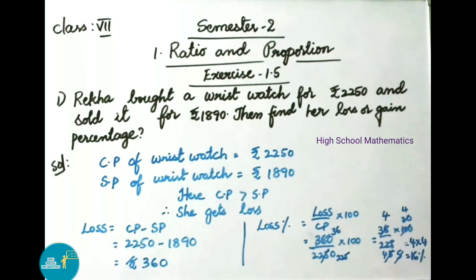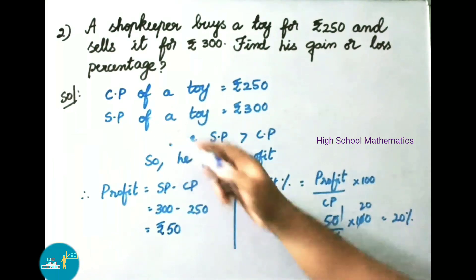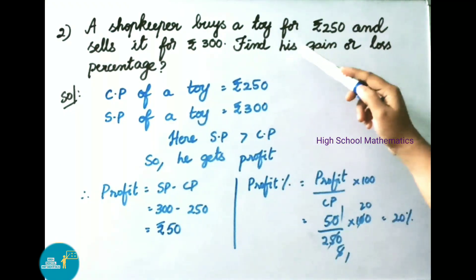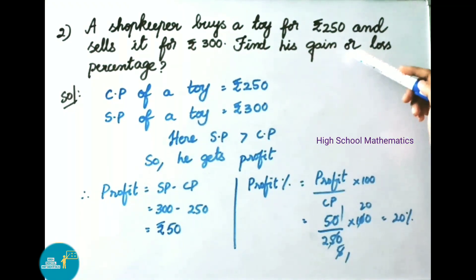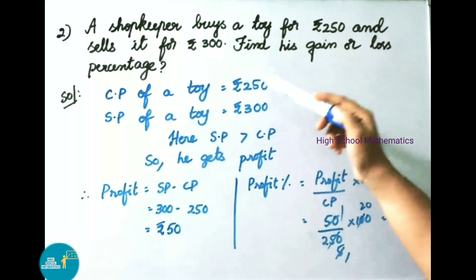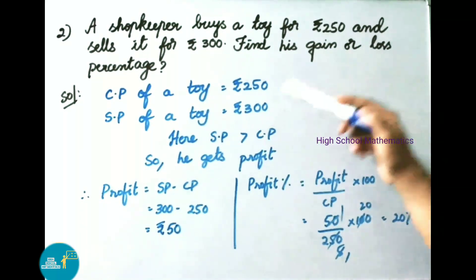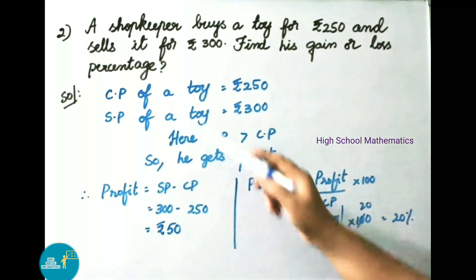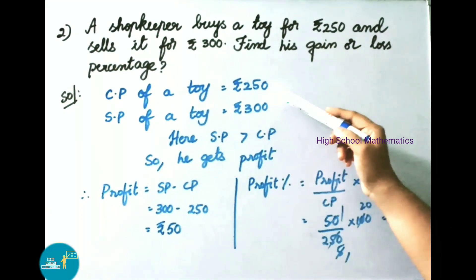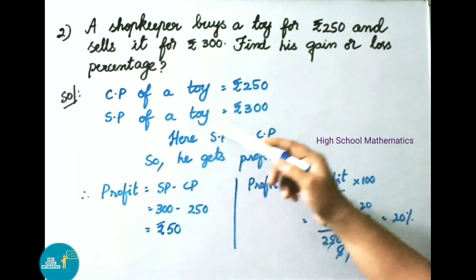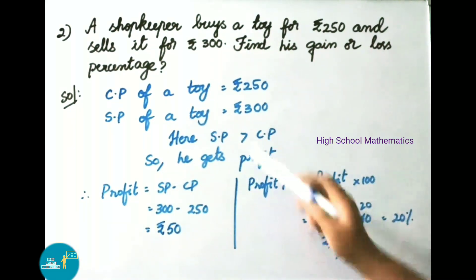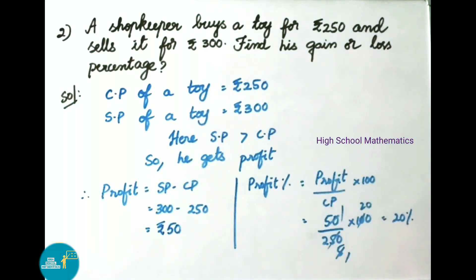Question number 2: A shopkeeper buys a toy for 250 rupees and sells it for 300 rupees. Find his gain or loss percentage. Solution: cost price of toy is 250 rupees, selling price of toy is 300 rupees. Here selling price is greater than cost price, so he gets profit.